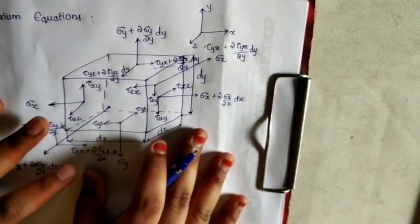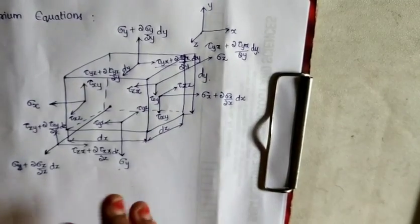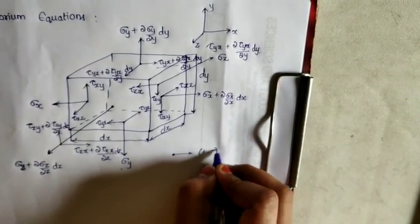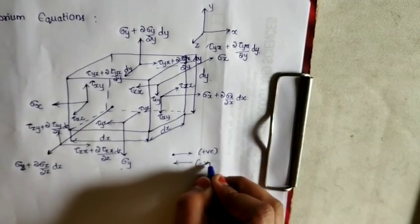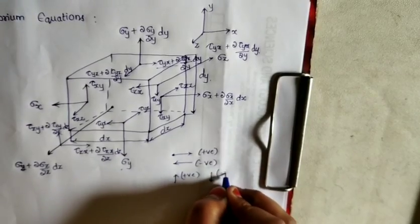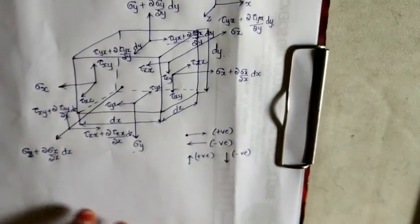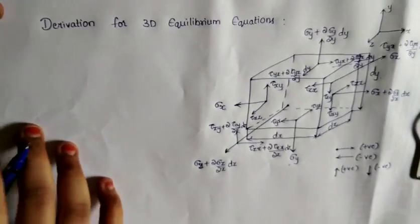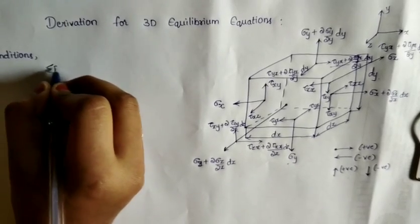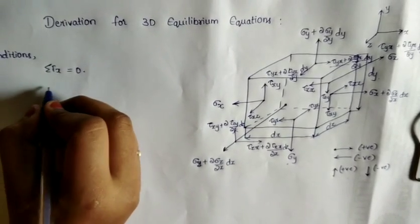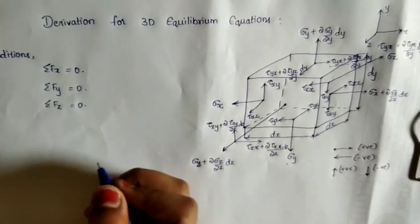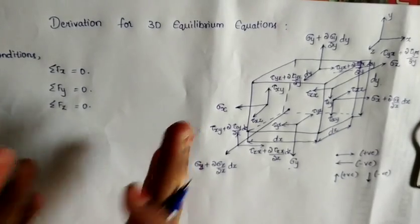Now we have all terms. We need to understand the sign convention: upward direction is positive and downward direction is negative. We will now start setting up the equilibrium equations, applying the conditions: Sigma Fx = 0, Sigma Fy = 0, and Sigma Fz = 0, because it is an equilibrium equation and all forces must equal zero.